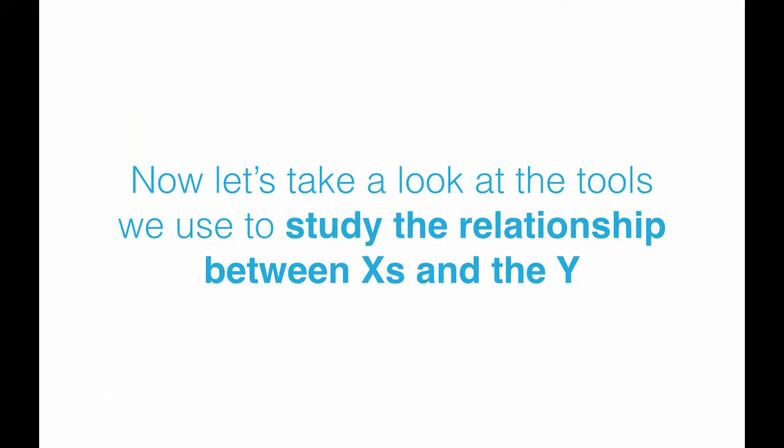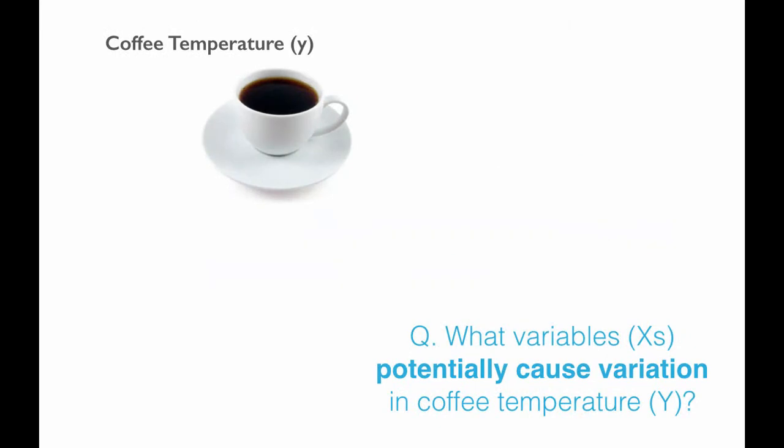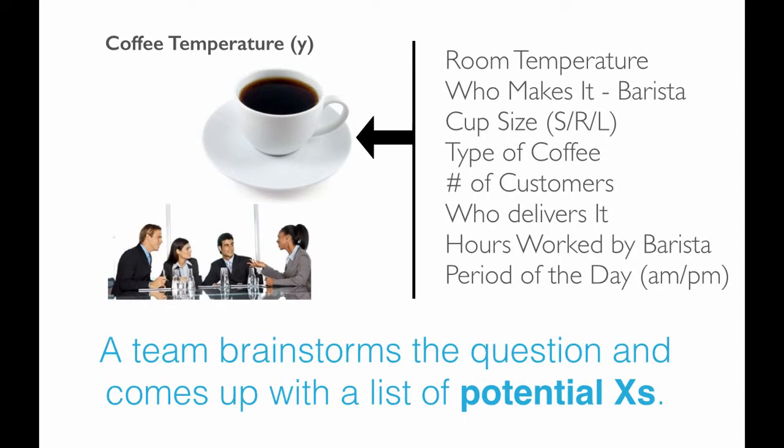Now let's look at the tools we use to study the relationship between the X's and the Y. The question at this point would be: what variables — the X's — potentially cause variation in the coffee temperature? To answer that question, we would bring a team of people together, particularly those who work within the process, in this case baristas or coffee making people, and they would brainstorm and come up with a list of potential X's.